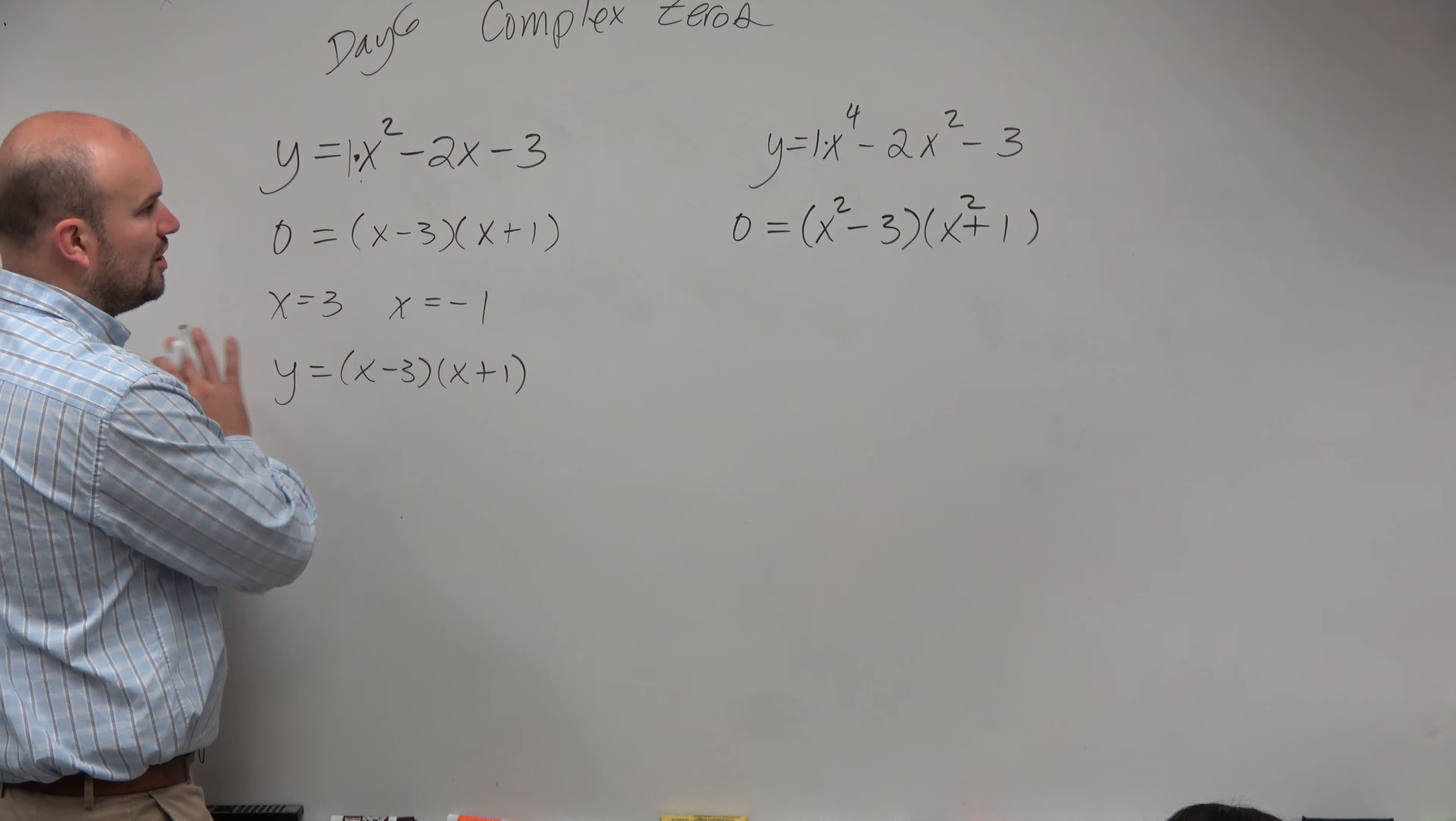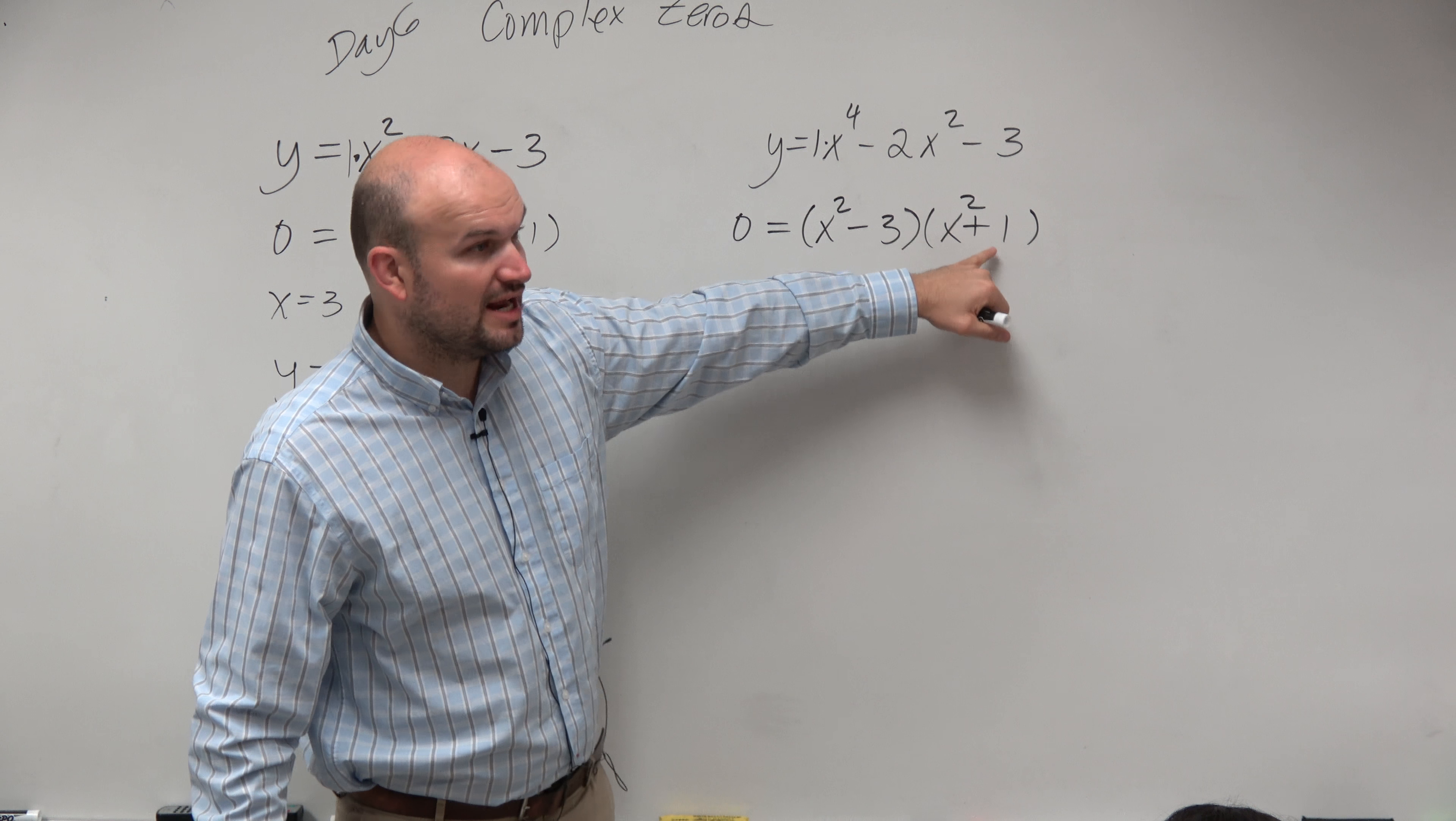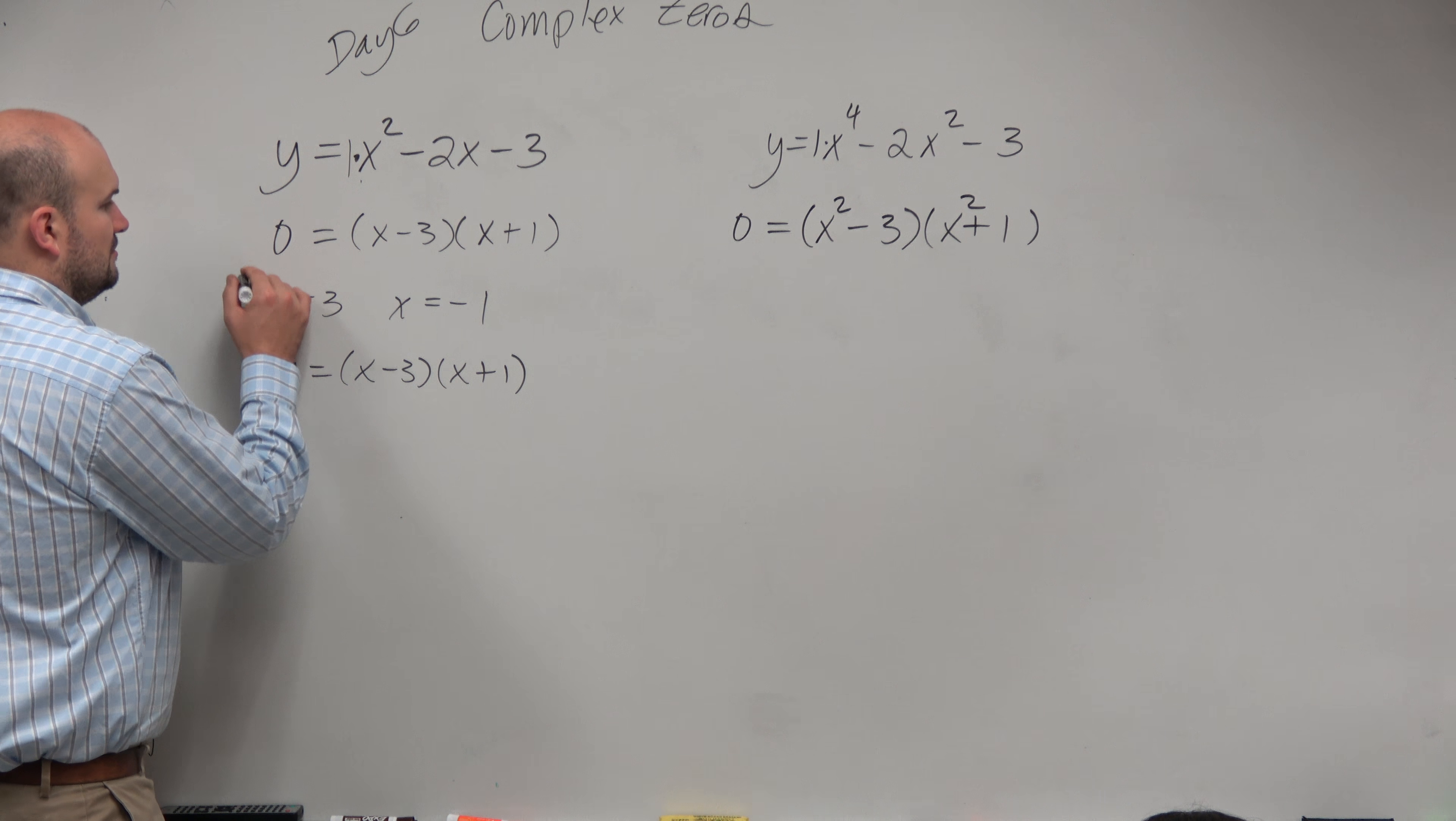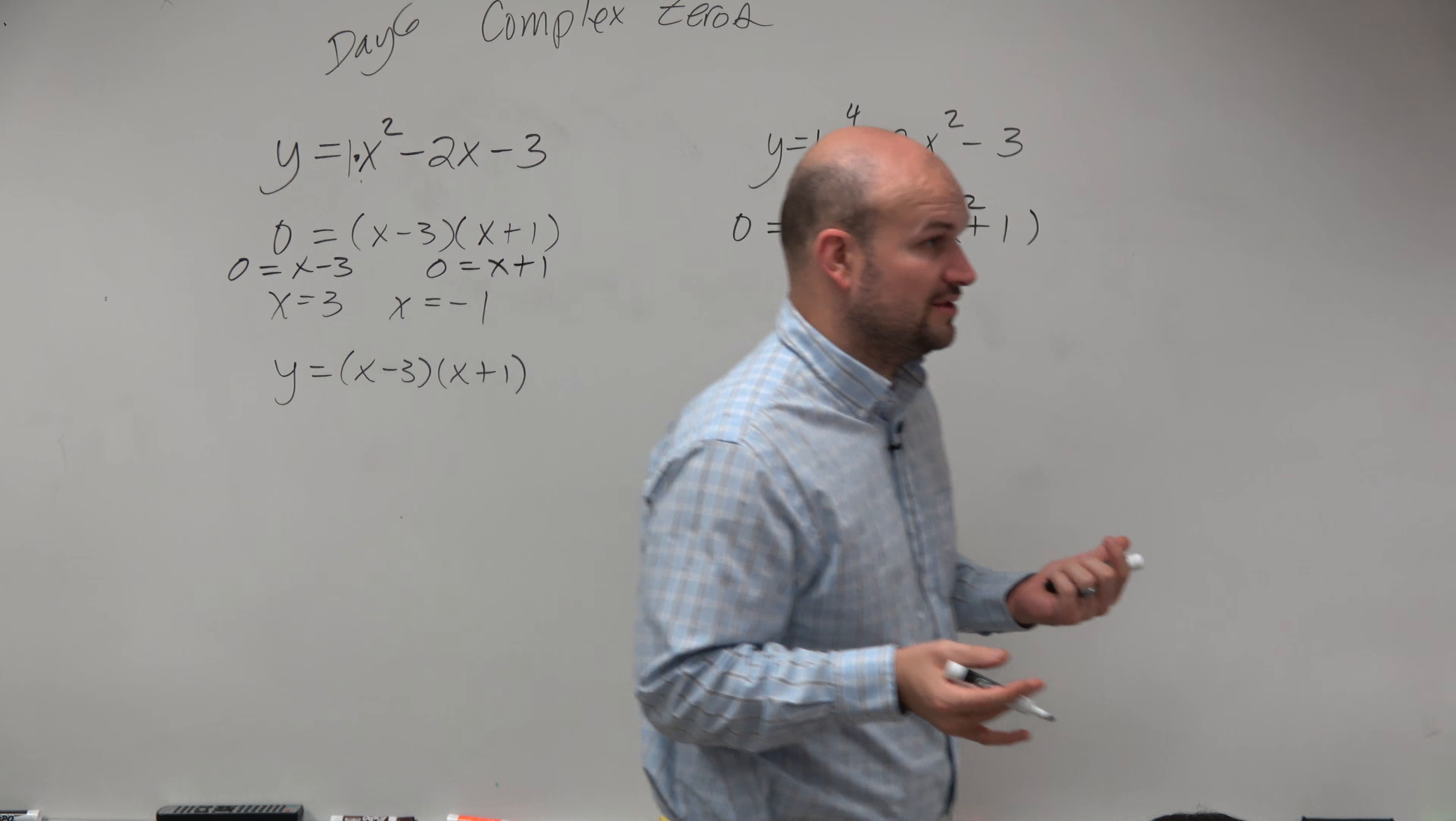the same respect, we have to go back and solve. Now, here I didn't show using the zero product property. So here, be careful. The zeros are not 3 and negative 1 like they were over here. Right? And again, maybe I should even show 0 equals x minus 3 and 0 equals x plus 1 to show you we're using the zero product property to get those.